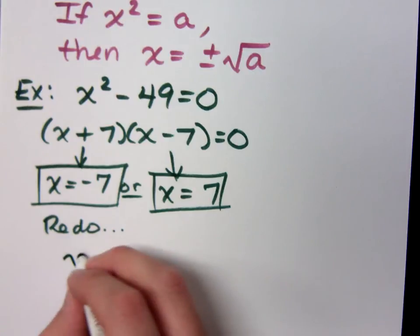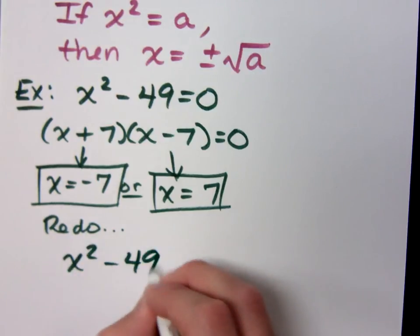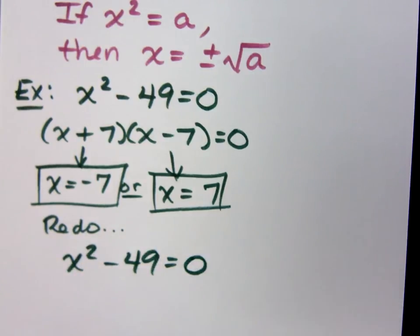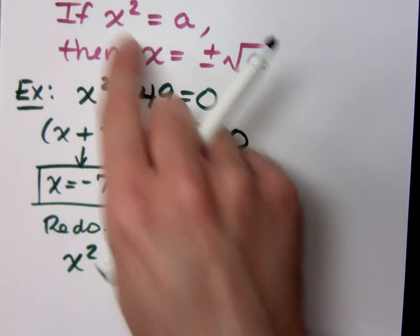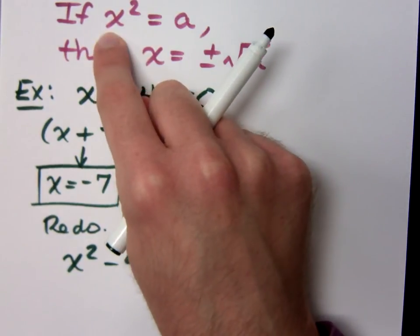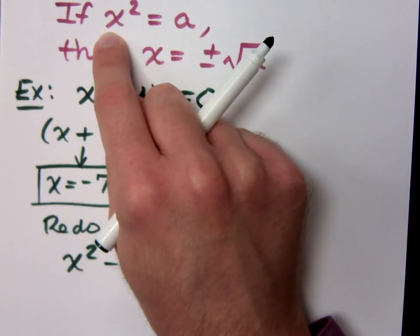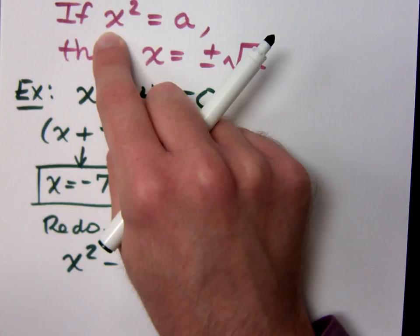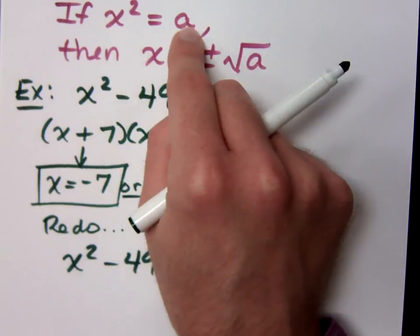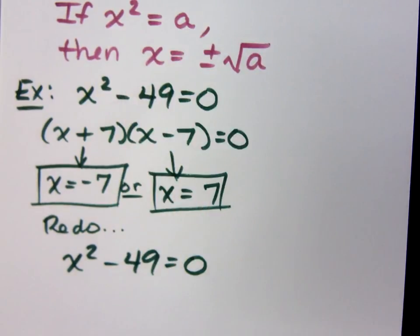So if I take x squared minus 49 is equal to zero, according to the square root property, you need to get the square by itself. If the only place that you have a variable is a square or it's contained inside of a square, get it by itself, and then you apply the square root property. So how do I get the square by itself?